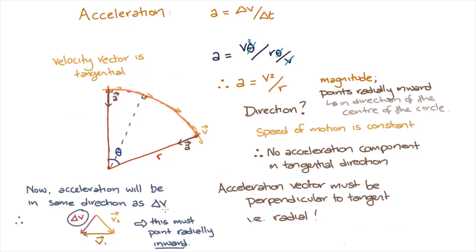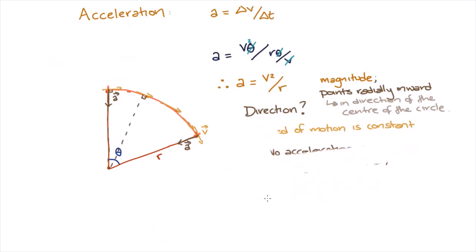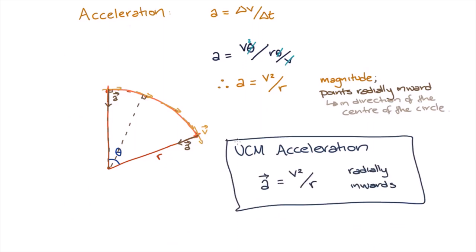And there we have it. Note, the acceleration of an object undergoing uniform circular motion is v squared on r and it points radially inwards. This is called the centripetal acceleration.